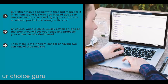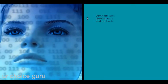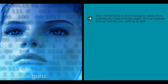There is also the inherent danger of having two versions of the same site - Google might see this as spammy or confusing, which could hurt your ranking. One option is to use the canonical link attribute on all your experimental pages and point it toward your original page. This tells Google's robots which page is the original, ensuring it understands what's going on and won't see it as suspicious. Don't be tempted to block Google's robots from viewing your experimental pages - this can actually end up hurting your ranking as well.